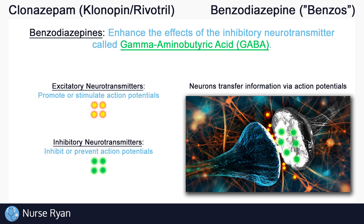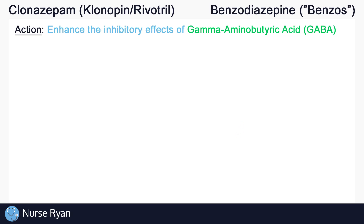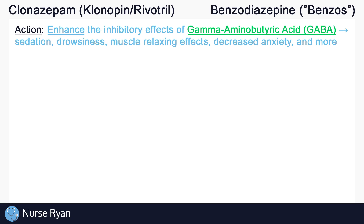Let's review all that. Benzodiazepines, like clonazepam, work by enhancing GABA. So clonazepam enhances the main downer of the nervous system, which results in all sorts of inhibitory effects throughout the body. This includes sedation, drowsiness, decreased anxiety, muscle relaxing effects, and more.